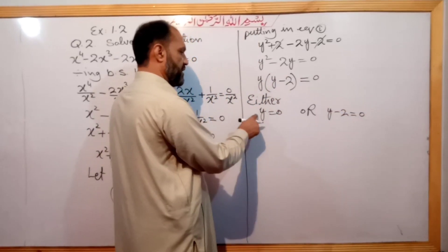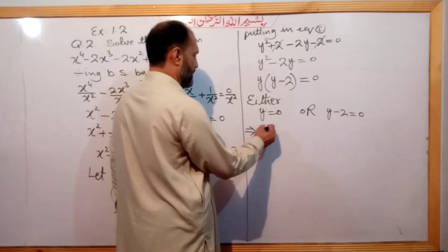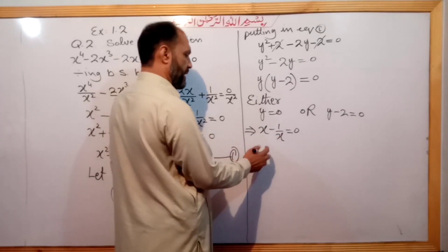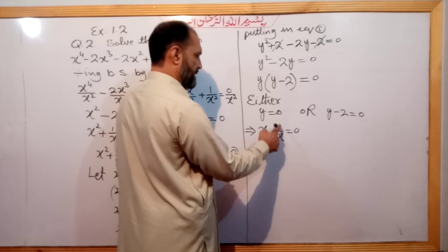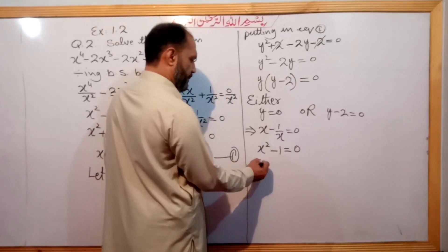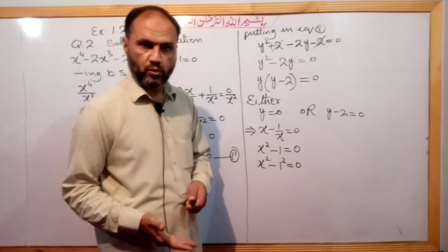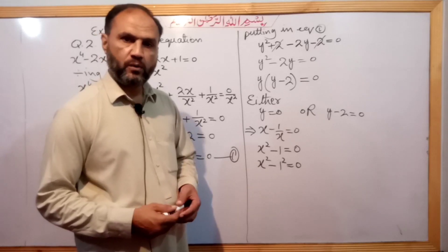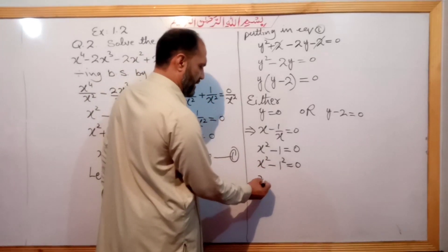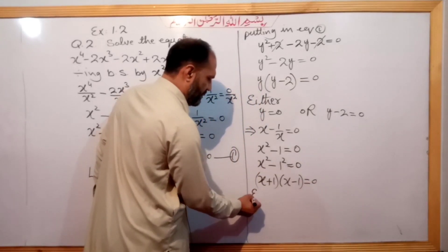For the first case, y equals 0 implies x minus 1/x equals 0. Multiplying both sides by x: x² minus 1 equals 0. So x² equals 1, which factors as (x plus 1)(x minus 1) equals 0. Either x plus 1 equals 0 or x minus 1 equals 0, giving x equals negative 1 or x equals 1.